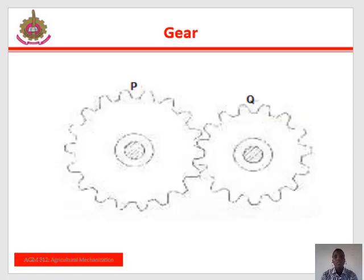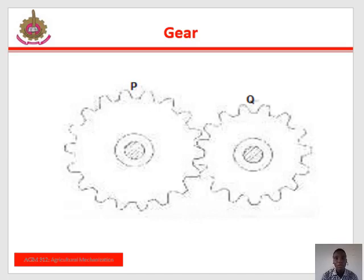Gears. The image on the slide shows a typical gear in mesh — we have gear P and gear Q. There are three types of gear commonly used: we have the spur gear, we have the bevel gear, and we have the worm gear. The speed ratio of a gear drive depends on the number of teeth in the gears. The one with the fewer number of teeth revolves faster.